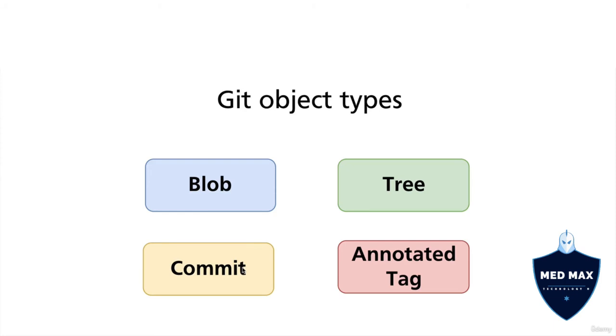And afterwards, by checking out different commits, you could move in time and go to different historical versions of the git repository.